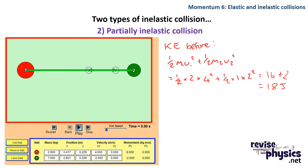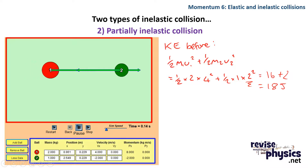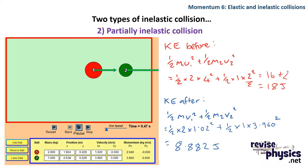Momentum after, using the new velocities, also gives 6 kilogram meters per second — so momentum is conserved. For kinetic energy, plugging in the initial values I get 18 joules. After the collision the kinetic energy is 8.882 joules. It hasn't lost as much kinetic energy as the perfectly inelastic collision, but it has still lost kinetic energy, therefore this is an inelastic collision.